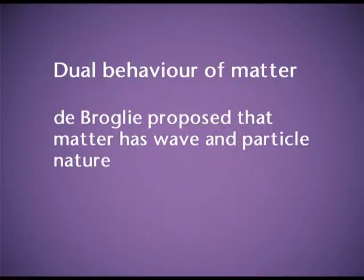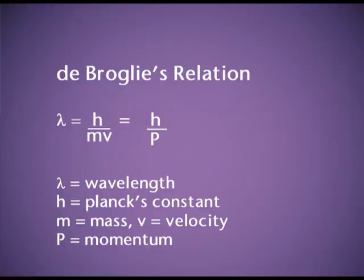The dual behavior of matter. Just on the lines of the dual behavior of electromagnetic radiations, de Broglie also suggested that matter has dual behavior. But this dual behavior was observed in electrons and subatomic particles, and not in heavier objects. Mathematically, de Broglie's equation is lambda equals h divided by p, where lambda is the wavelength, h is Planck's constant, and p is momentum.